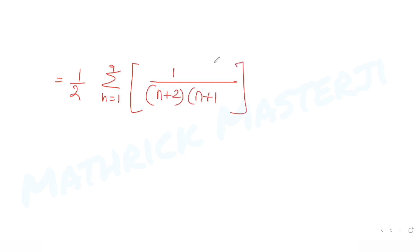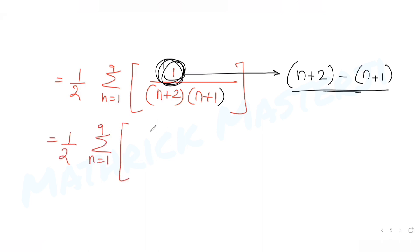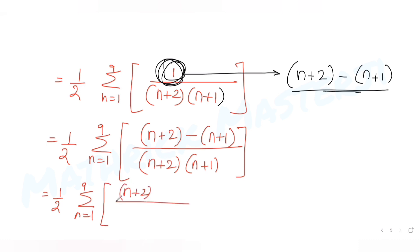Taking 1/2 out, we have (1/2) · summation n=1 to 9 of 1/[(n+2)(n+1)]. We rewrite the numerator 1 as (n+2)−(n+1), giving (1/2) · summation of [(n+2)−(n+1)] / [(n+2)(n+1)], which splits into 1/(n+1) − 1/(n+2).